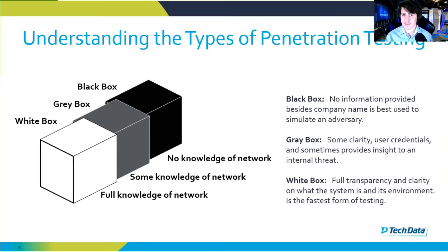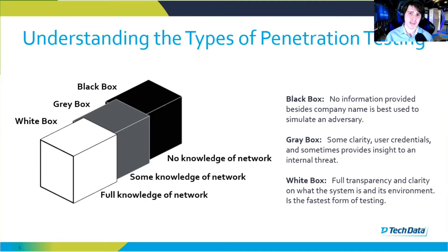Let's get into the types of penetration tests: black box, gray box, and white box. Black box testing is where the least amount of information is given to the tester — maybe only the company name — and then they have to do all the research and create an attack plan. This is the most real world simulation you're going to get, as if an actual hacker was trying to get into a network. Similar to the house analogy, this would be like just giving the consultant your home address and nothing else.